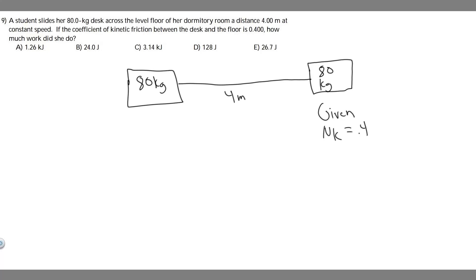In this problem, we're told a student slides her 80-kilogram desk across the level floor of her dormitory room a distance of 4 meters at a constant speed. The coefficient of kinetic friction between the desk and the floor is 0.4. How much work does she do?